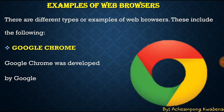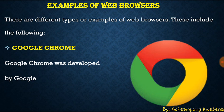Now let's look at some examples of web browsers. The first one is Google Chrome. This is a common browser that we normally see on our mobile phones and most desktop computers. Chrome was developed by Google to be used on mobile phones or desktop computers.